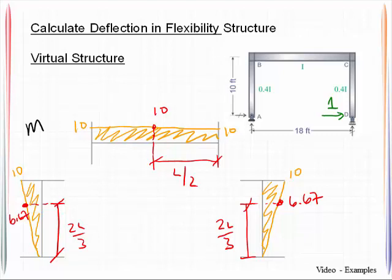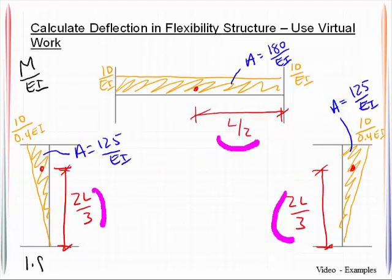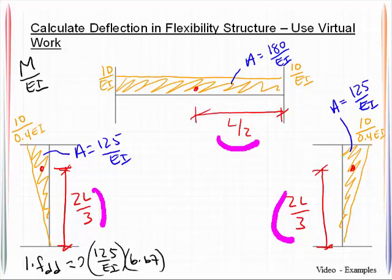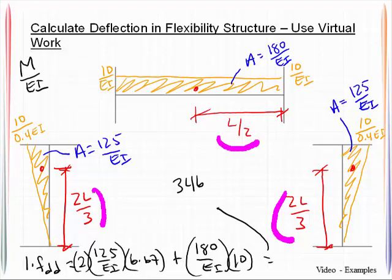I am now prepared to make the calculation for the deflection. That will be 1 times FDD is equal to 125 over EI times 6.67. I've got two of those areas, two of those situations going on, plus 180 over EI times 10. This will give me 3,467.5 over EI.